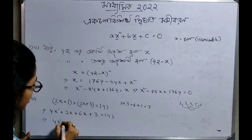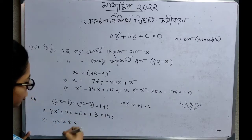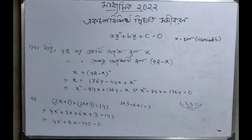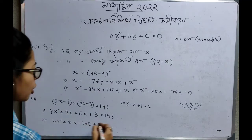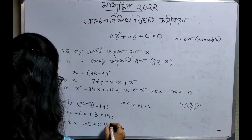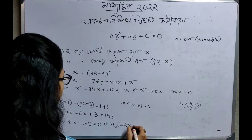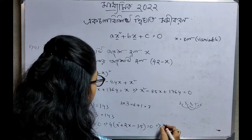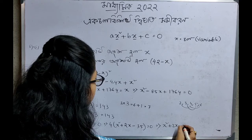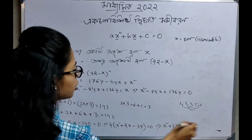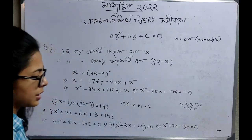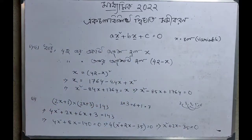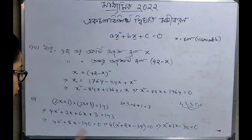So 4x² plus 8x is equal to 143, which gives 4x² plus 8x minus 140 equal to 0. We can take 4 as common, giving x² plus 2x minus 35 equal to 0. This is a proper quadratic equation in general form.